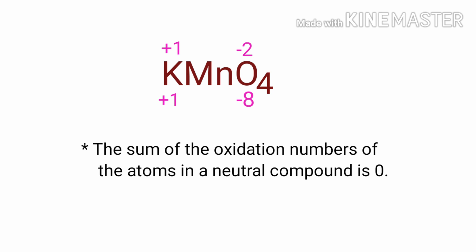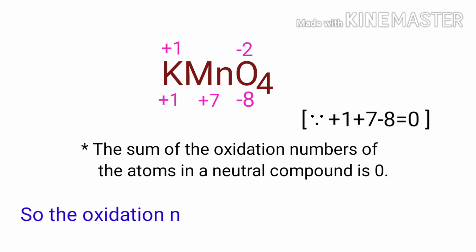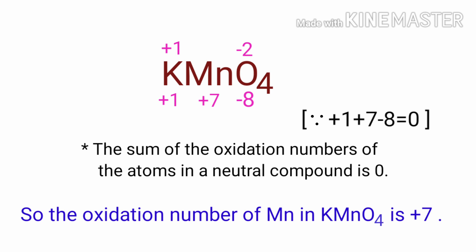As per the rule of assigning oxidation numbers, the sum of the oxidation numbers of the atoms in a neutral compound is equal to 0. So the number under manganese must be plus 7. Therefore, the oxidation number of manganese in potassium permanganate is plus 7.